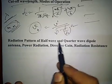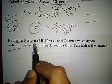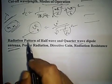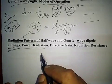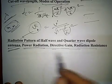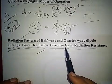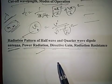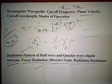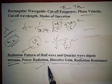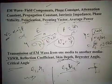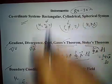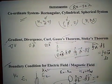Radiation patterns of half-wave and quarter-wave dipole antennas are very important and have been asked in various exams. Power radiation, directivity, and radiation resistance are also asked for antenna topics. Only limited antenna topics need to be read, and based on previous GATE exam analysis, these specific topics cover approximately 80 to 90 percent of the questions asked.